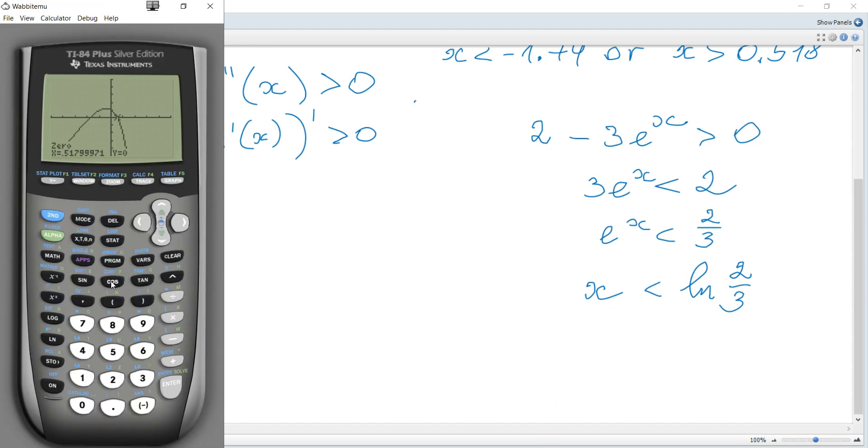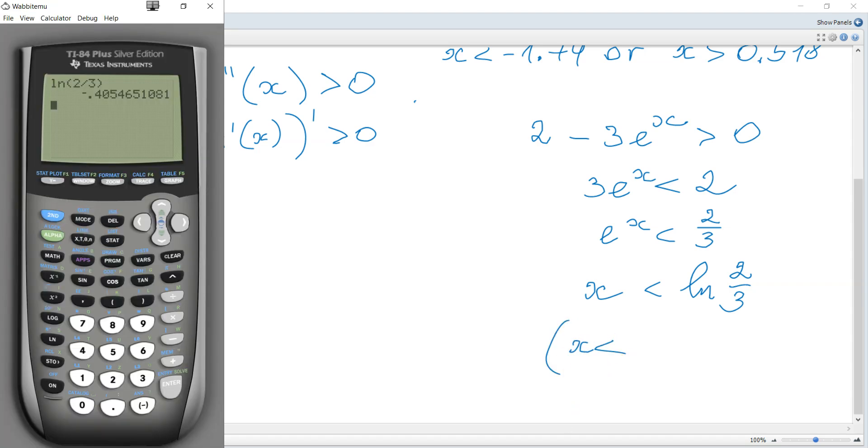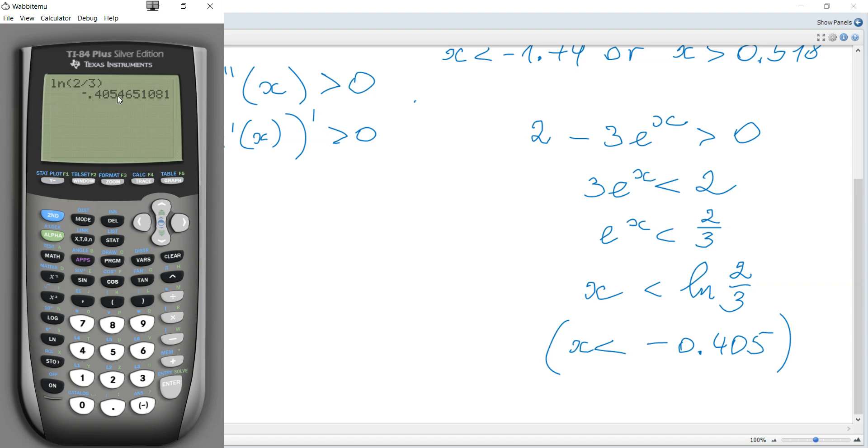Or as a decimal, we can write the exact form as ln(2/3), so x is less than negative 0.405 to three significant figures.